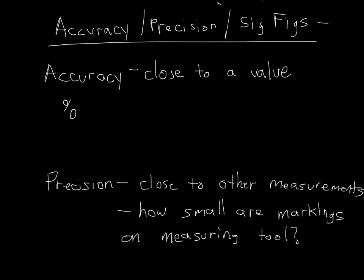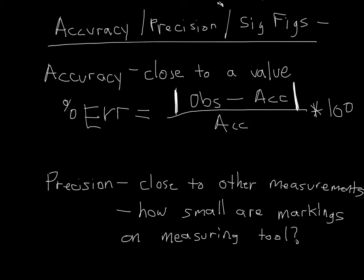A percent error is a calculation you can make. Percent error equals the absolute value of some observation that you make minus some accepted value. You observe or measure something that you know should be a certain number. Subtract the observation from the accepted value and divide by the accepted value, then multiply by 100. This gives you a measure of how statistically close you are to an accepted value, so how good your experiment is.